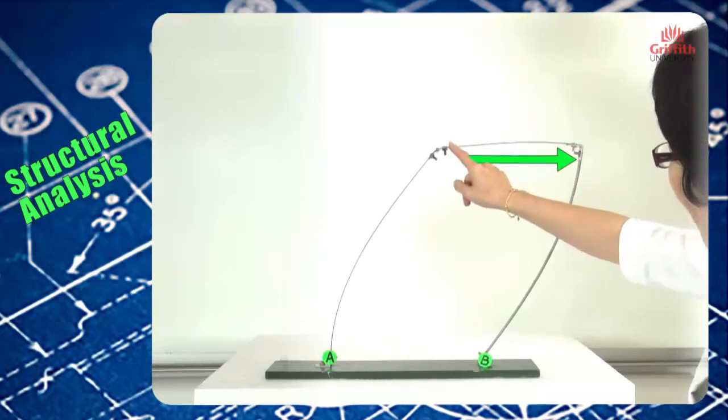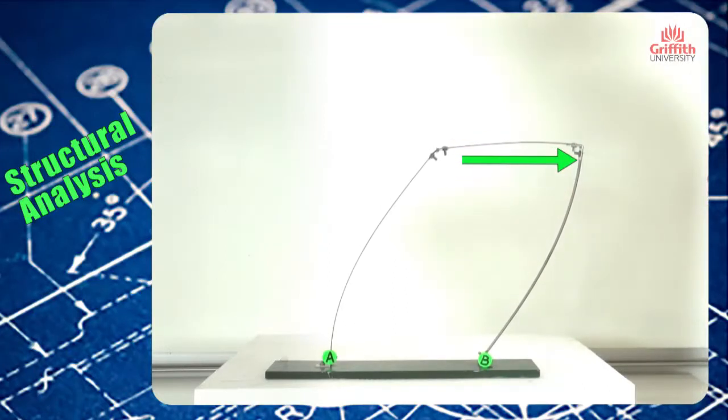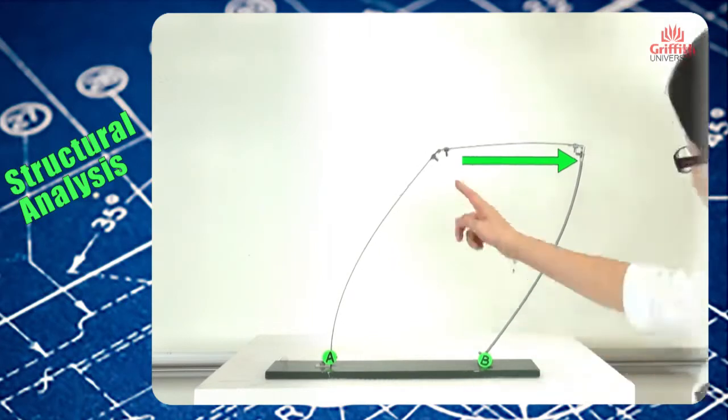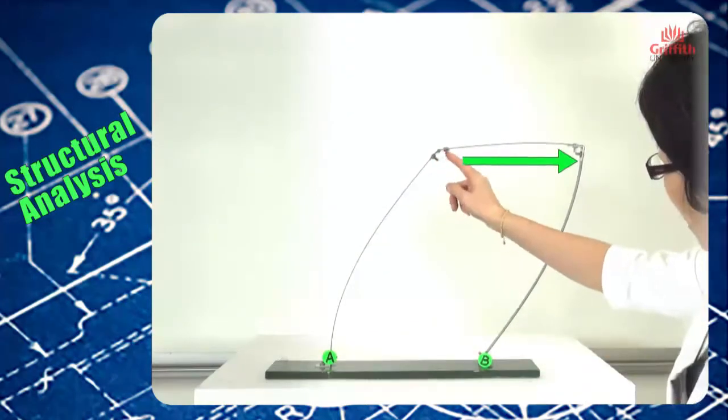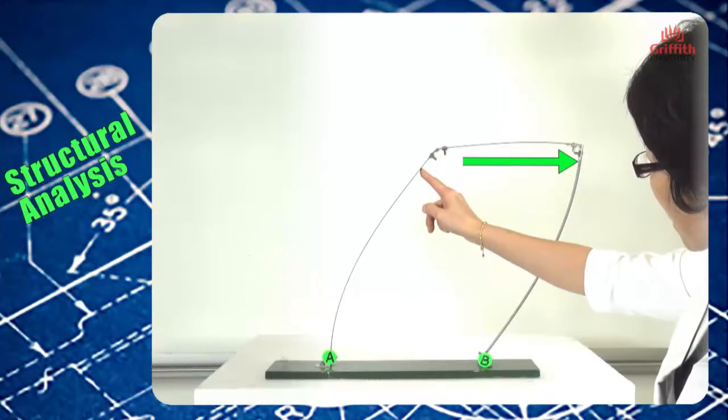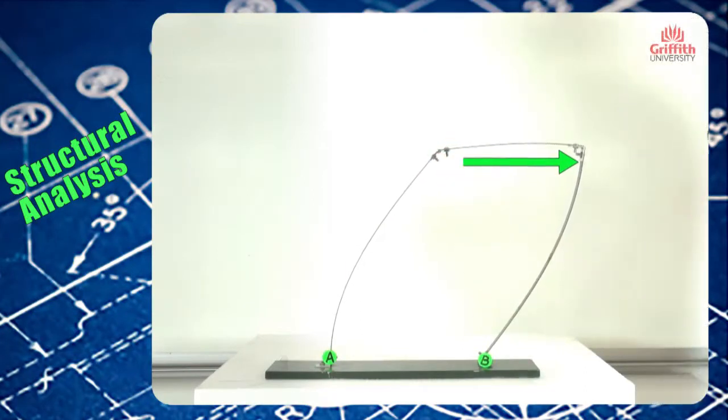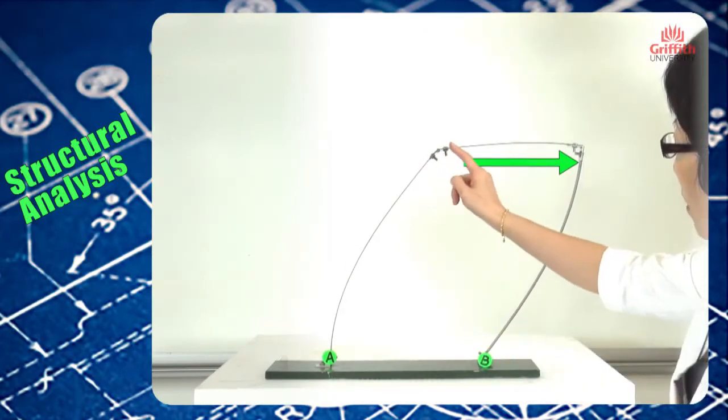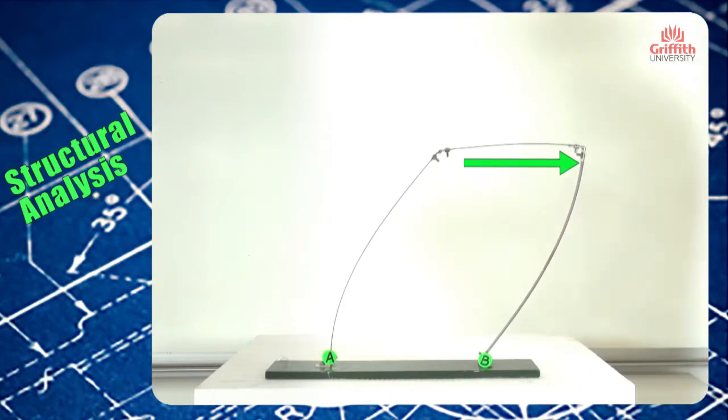We will see that because the connection between the beam and column here is an internal hinge, the column and the beam can deflect separately without a moment constraint.